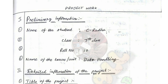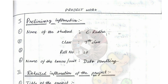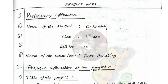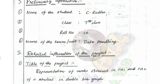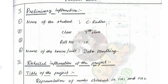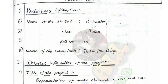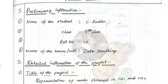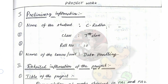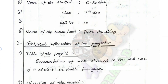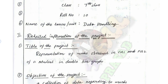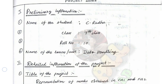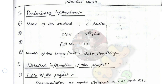Bismillahirrahmanirrahim. Hey guys, welcome back to my channel that is still a learner. This video is all about 7th class FA2 maths project work. Our title is data handling. Just watch till the end and write down each and every side heading and what is given here. I hope this video is very helpful for you, so please do like this video and share, and don't forget to subscribe. Thank you so much, bye bye, take care.